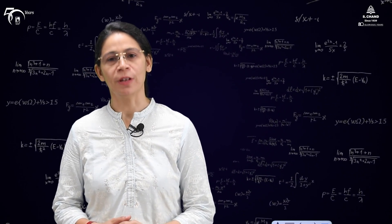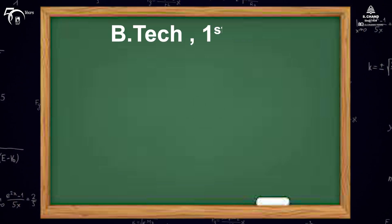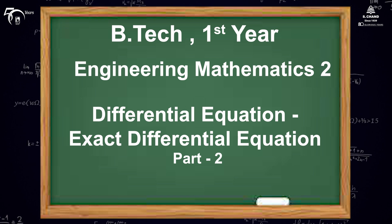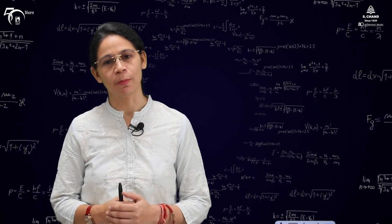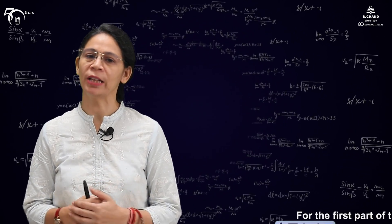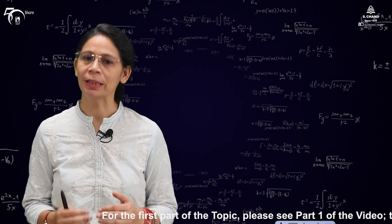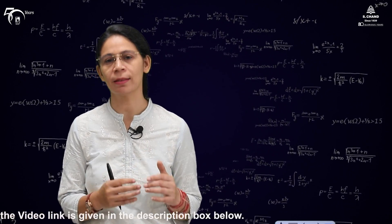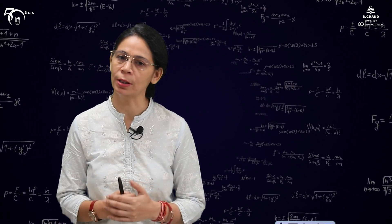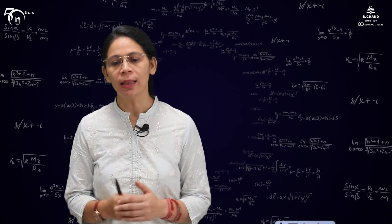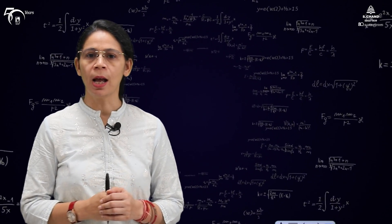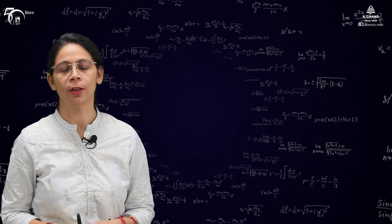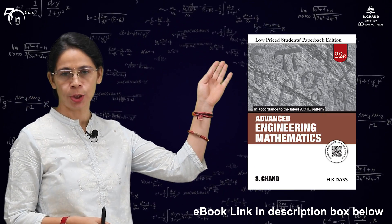Welcome back to the second part of the video. In the first part we learned how to check whether a given differential equation is an exact differential equation or not, and if yes, the solution technique for it. We took one example and found out the expression for f(x,y). For details you can go through the book from S.C.A.N Publishing; the link is given in the description box.